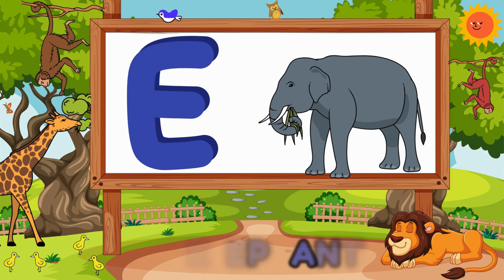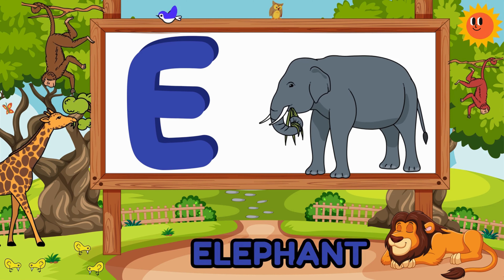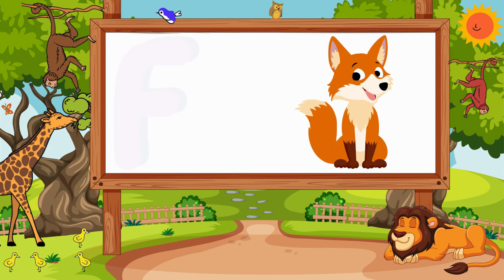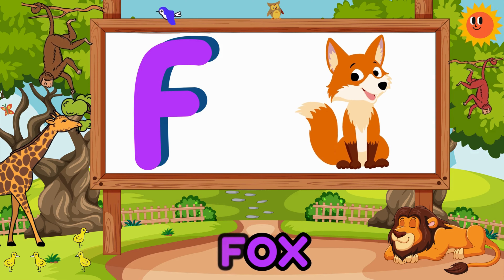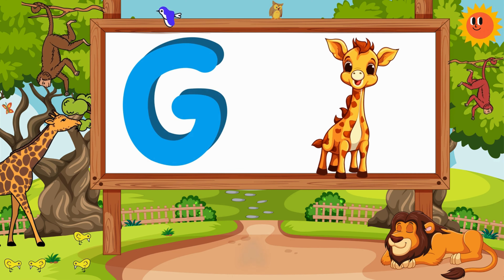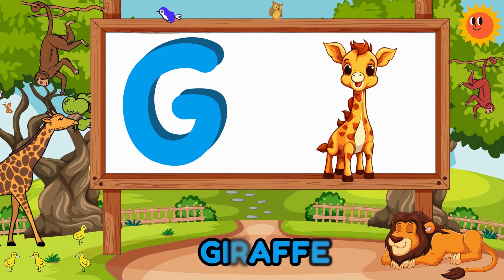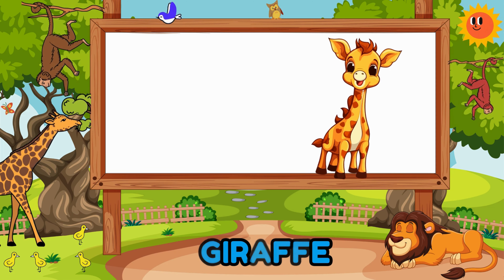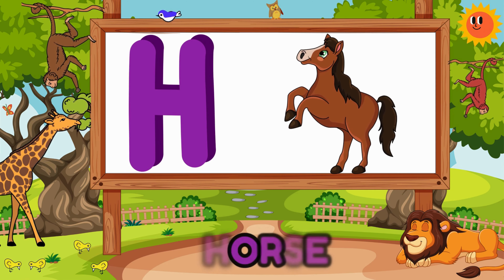E is for elephant with a trunk so long. F is for fox in the forest it belongs. G is for giraffe reaching for the sky. H is for horse galloping by.